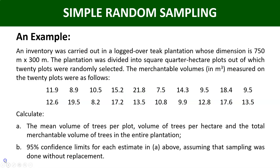An inventory was carried out in a locked over thick plantation whose dimensions are 750 meters by 300 meters. The plantation was divided into square quarter-hectare plots, out of which 20 plots were randomly selected. The measurable volumes in cubic meters measured on the 20 plots were as follows, with readings ranging from 11.9 to 13.5.